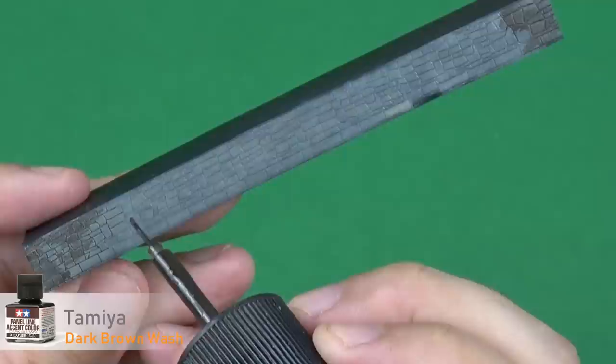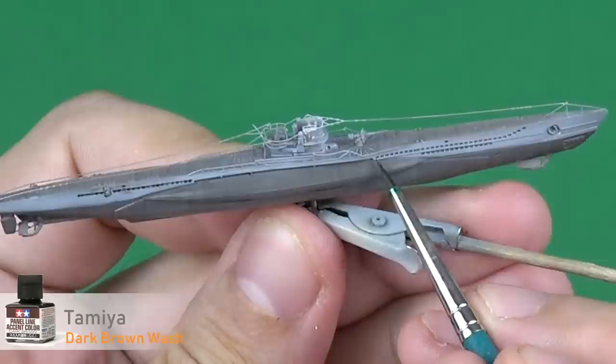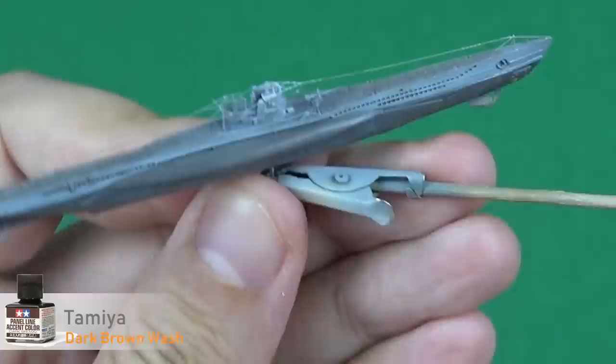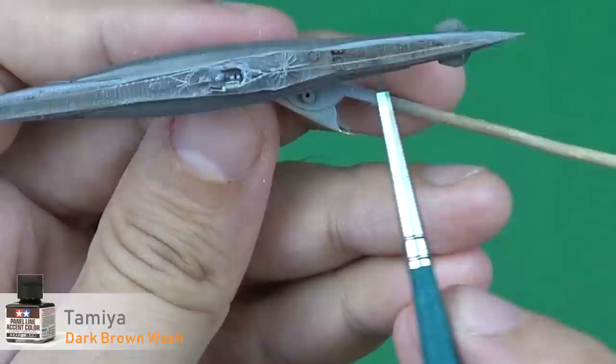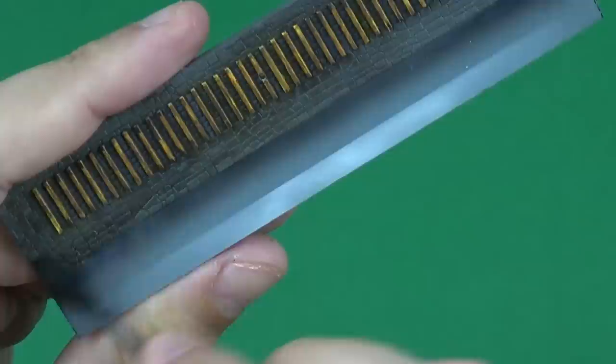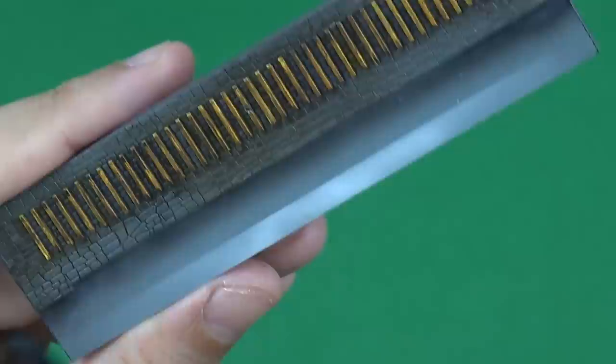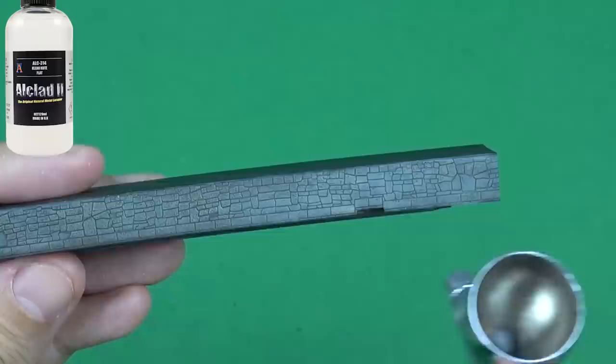I am applying the dark brown weathering mixture to all painted parts. Now I am wiping the excess wash with turpentine. And the first stage is completed. I can apply matte varnish then start the second stage, detailing and final weathering.